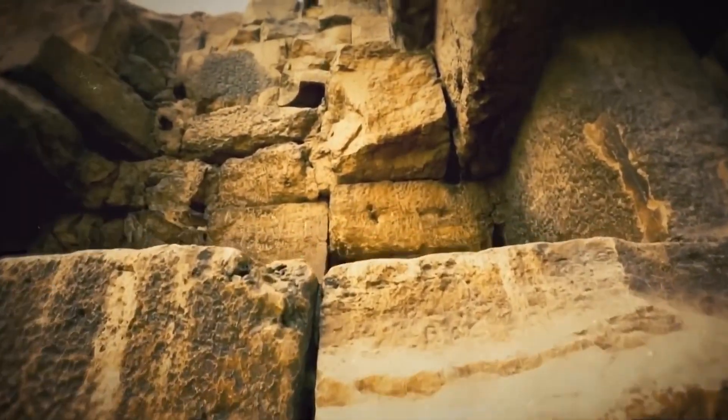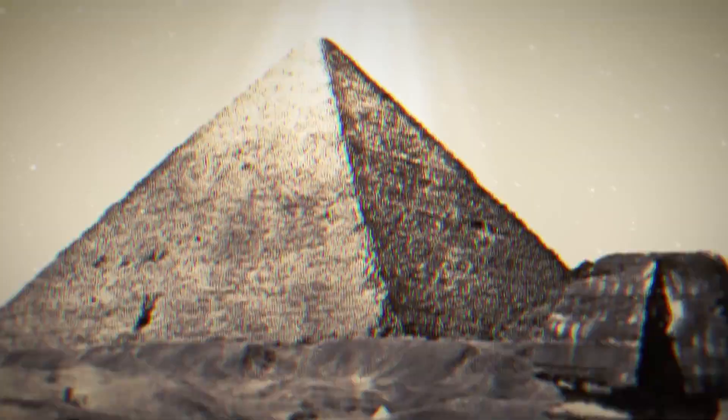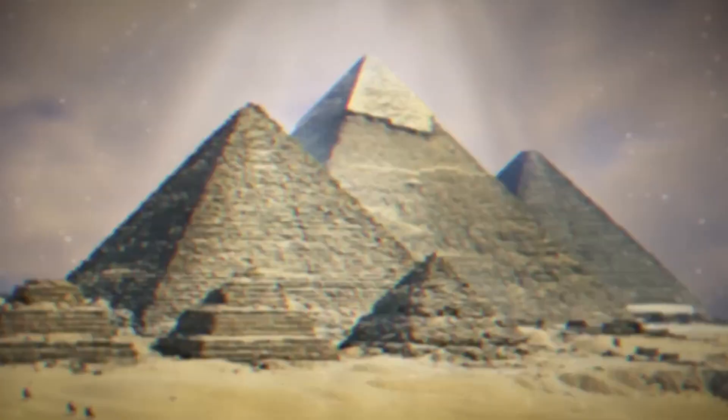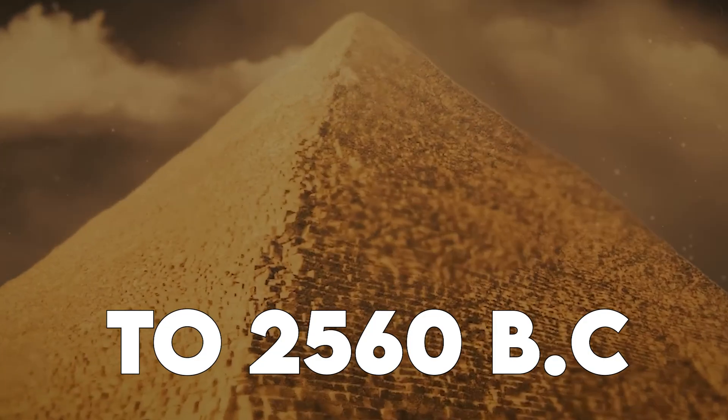The Great Pyramid of Giza, also known as the Pyramid of Khufu or Cheops, is the largest of the three pyramids. It was built around 2,580 to 2,560 BC during the fourth dynasty of the Old Kingdom of Egypt.